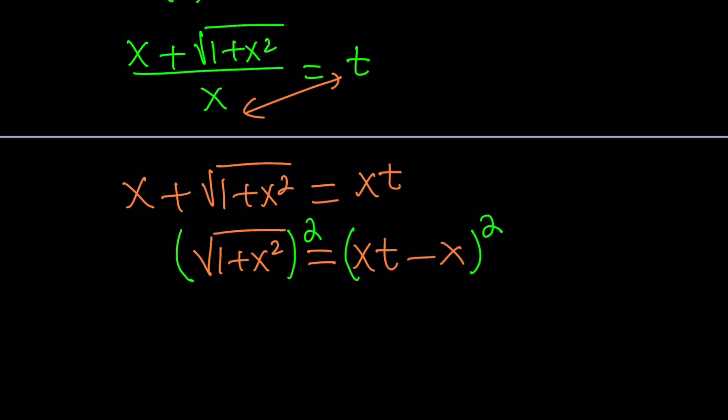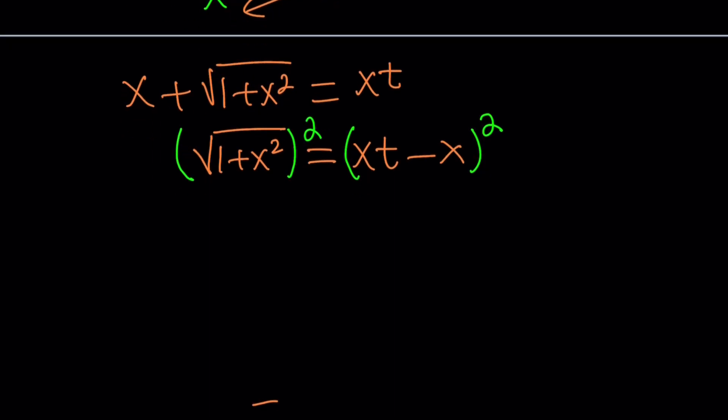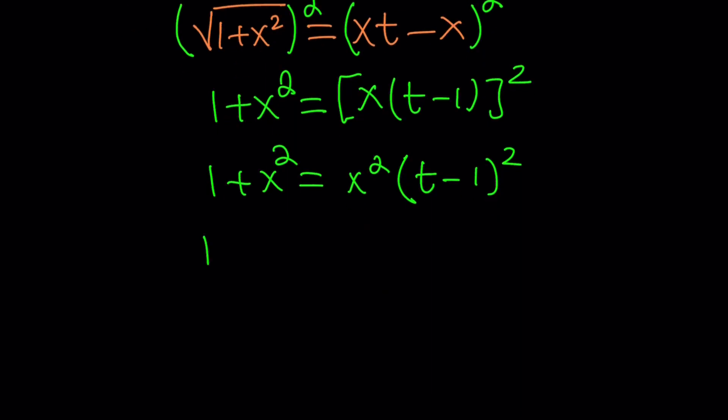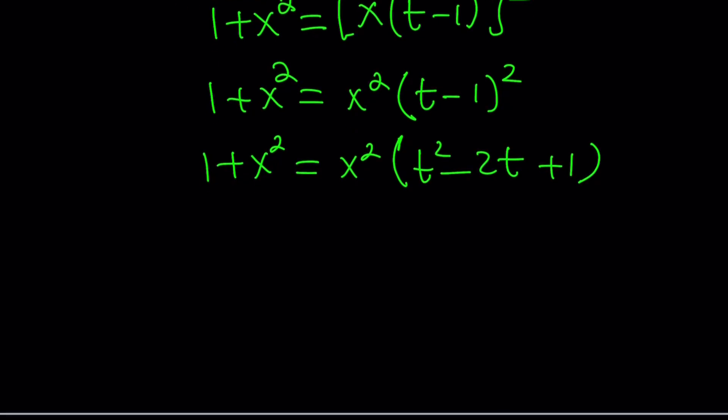And while squaring, I think I'm going to take an extra step here and write this as x times t minus 1 and then square it that way, which is going to be nicer. And this is just going to be 1 plus x squared. That's the nice thing about squaring radicals is that we get rid of the radical. Now, the right hand side is a product. So, if you are squaring a product, it's going to be x squared times t minus 1 squared. And then, if you expand it, you're going to get x squared times t squared minus 2t.